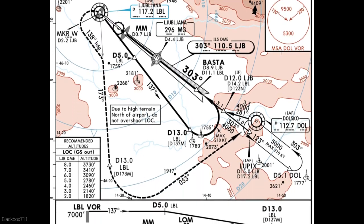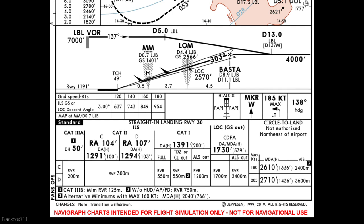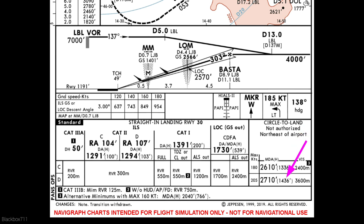Now we have to look at what altitude we have to fly the circling pattern. We can see we have two different ones: one is for max speed 180 knots indicated and that's 2,610 feet; the other one is for a maximum of 205 knots indicated and that will be 2,710 feet. That gives us a respective height above the threshold of 1,336 feet, and for the higher one, 1,436 feet.